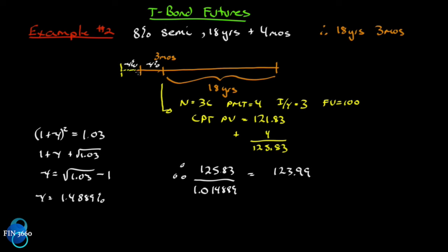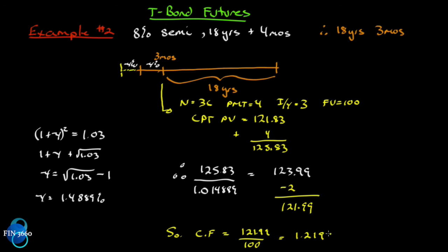On today's date, we're in the middle of a coupon period, so we owe the seller the accrued interest — four dollars earned over the period, we're halfway through, so we owe two dollars. Subtracting two gives us 121.99 as the value today. The conversion factor is 121.99 divided by 100 par value, which equals 1.2199 — meaning you need 1.2199 standard six percent bonds to equal one of these.